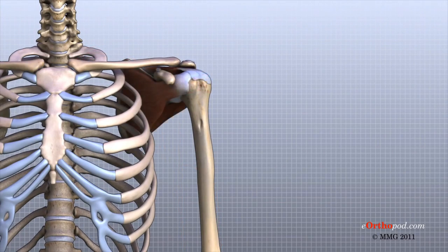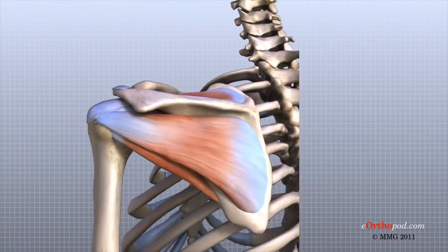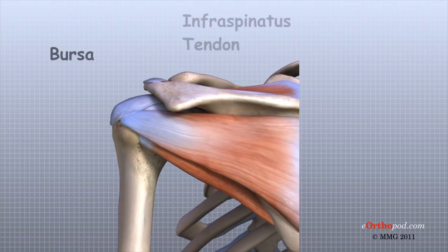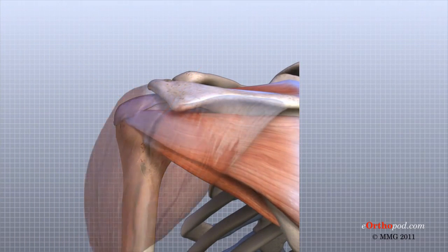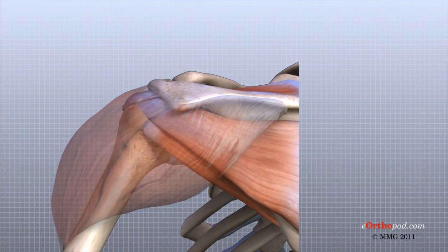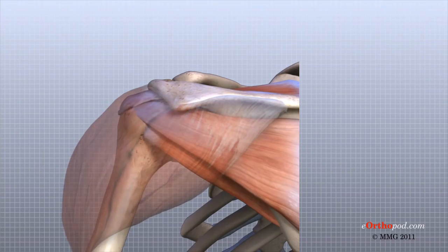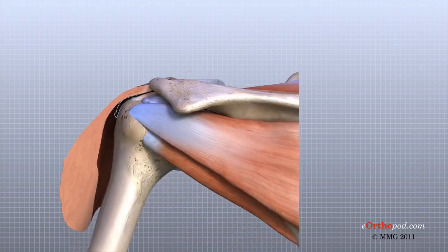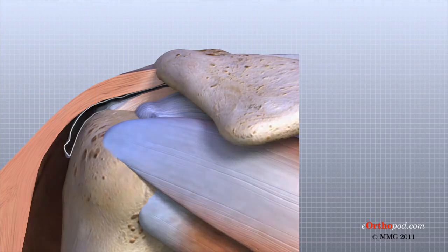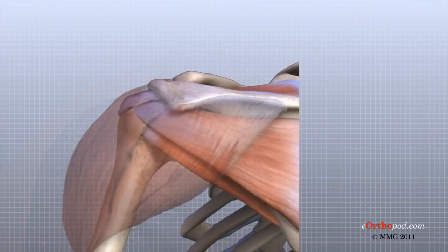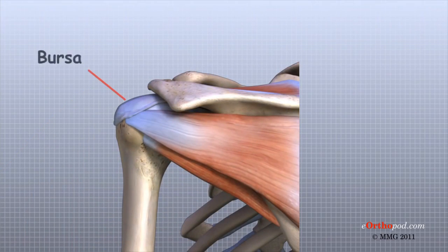Sandwiched between the rotator cuff tendons and the deltoid muscle are structures known as bursa. Bursa are found everywhere in the body, wherever two body parts move against one another and there is no joint to reduce the friction. A bursa is simply a watertight sac between two moving surfaces that contains a small amount of lubricating fluid.